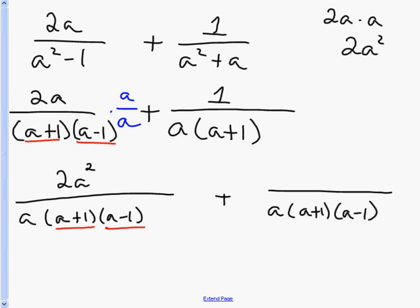Same thing for the second fraction. Comparing what I have — I already have a and (a+1) — what I'm missing is (a-1). So I need to multiply this fraction top and bottom by (a-1). Then 1 times (a-1) gives me a-1 in the numerator.